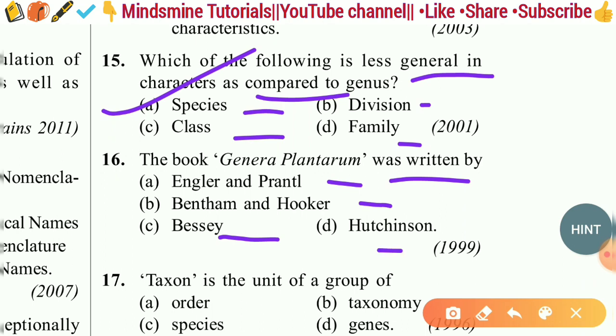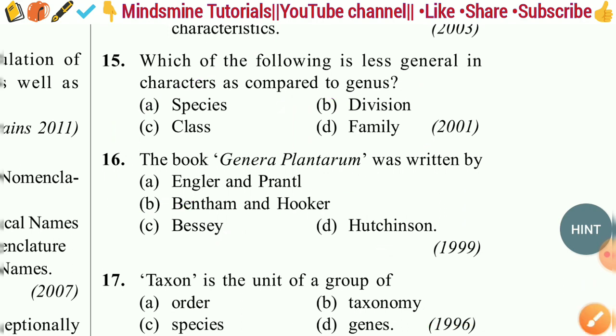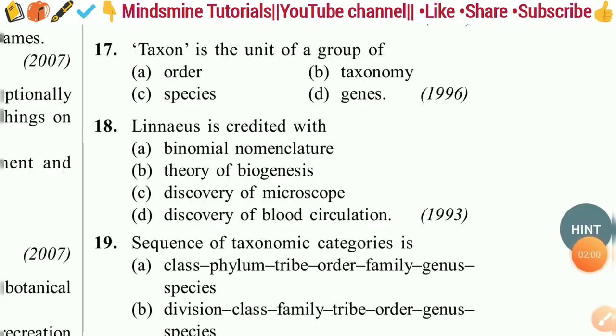Question sixteen: The book 'Genera Plantarum' was written by — Engler and Prantl, Bentham and Hooker, or Hutchinson? The correct answer is option B — Bentham and Hooker wrote 'Genera Plantarum.'